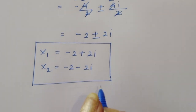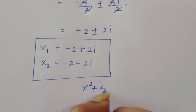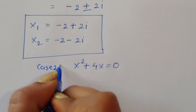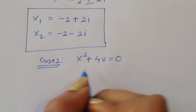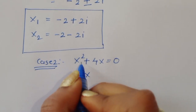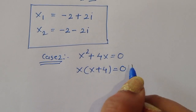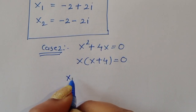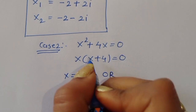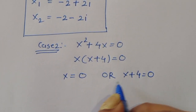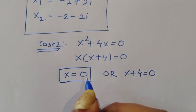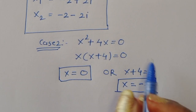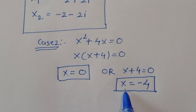For Case 2, x² + 4x = 0. Taking x common: x(x + 4) = 0. So we get two values: x = 0 and x + 4 = 0, giving x = −4. Thus x₃ = 0 and x₄ = −4.